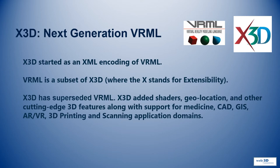X3D is next-generation VRML. X3D started as an XML encoding of VRML, and VRML is a subset of X3D — X3D has now superseded VRML. With X3D, we've added shaders, geolocations, and other cutting-edge 3D features, and we support several application domains, extending VRML to make it more usable.